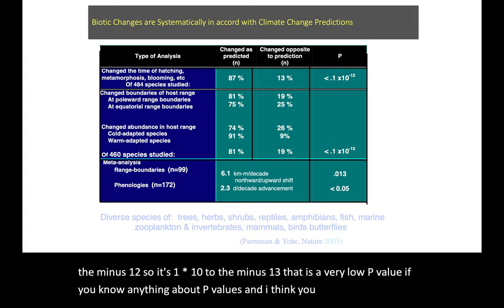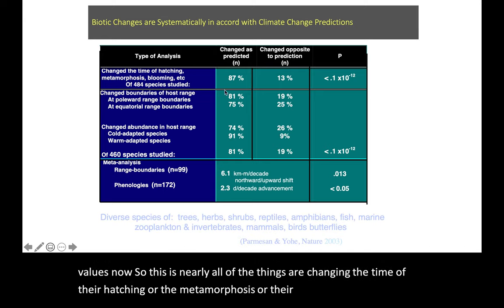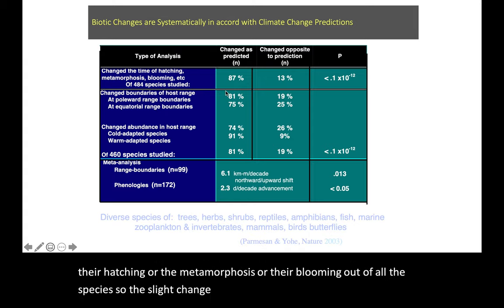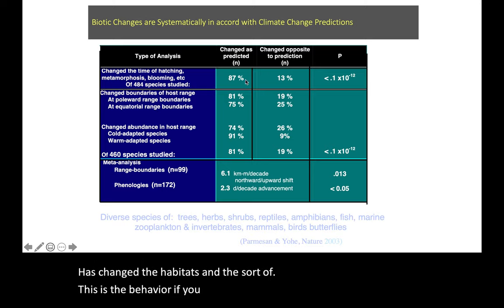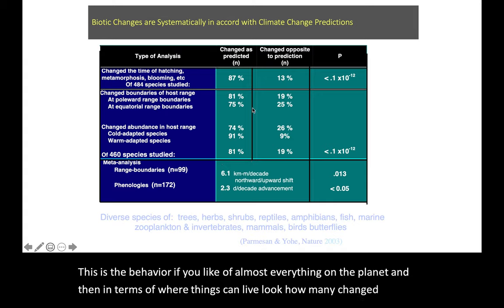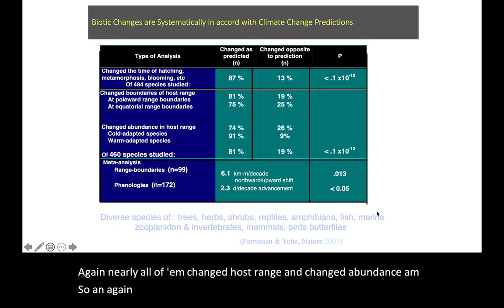Nearly all of the things are changing the time they're hatching, or their metamorphosis, or their blooming — out of all the species. The slight change in climate, just a 0.7-degree increase in temperature, has changed the habitats and the behavior, if you like, of almost everything on the planet. In terms of where things can live, look how many changed host range — nearly all of them changed host range and changed abundance. Our p-value is less than 1 times 10 to the negative 13. That is just amazing.